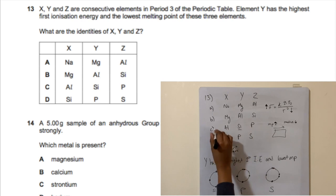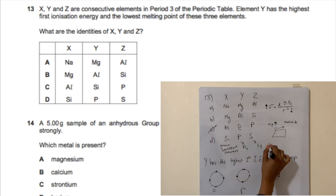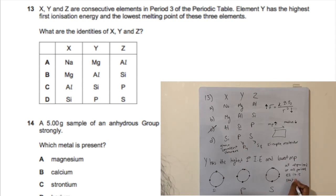Phosphorus exists as P₄ and sulfur as S₈ — both are simple molecular compounds forming simple covalent bonds. Atoms gain or lose electrons to become stable, either with all unpaired or all paired outer electrons. Silicon is stable with all outer electrons unpaired; phosphorus has five outer electrons and sulfur has six.